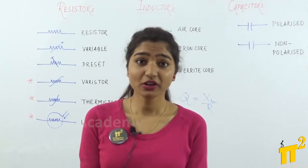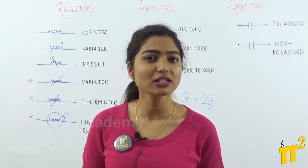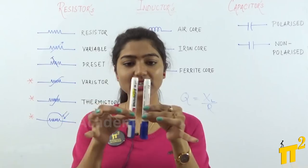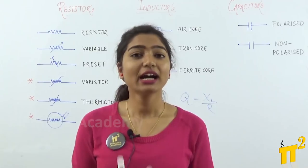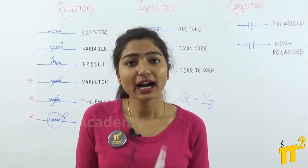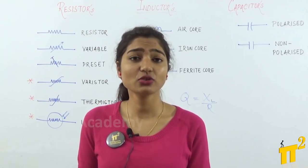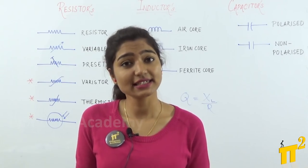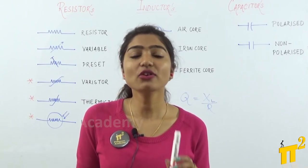The last topic of today's session is capacitors. Capacitors are basically two metal plates separated with a dielectric. A dielectric is nothing but an insulator. How do you distinguish a dielectric from an insulator? A dielectric is an insulator that has the tendency to be polarized in the presence of an electric field.